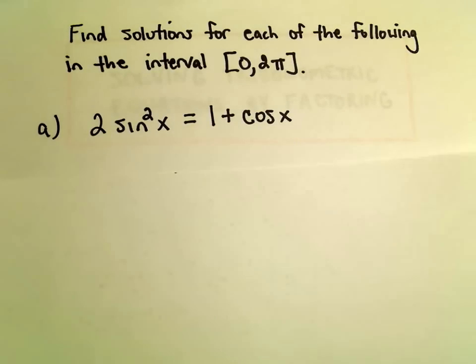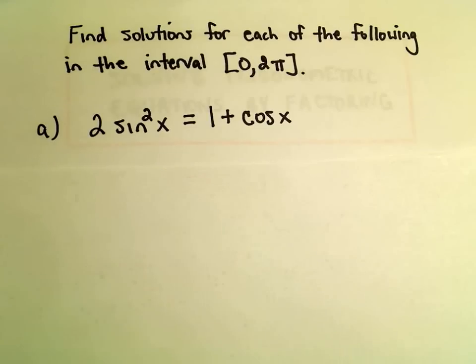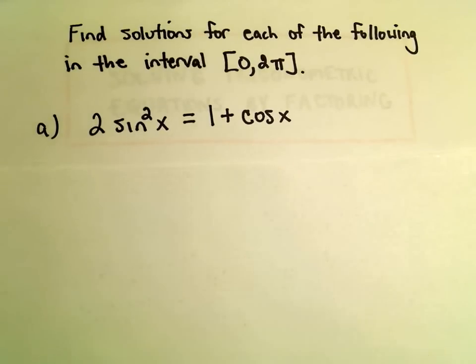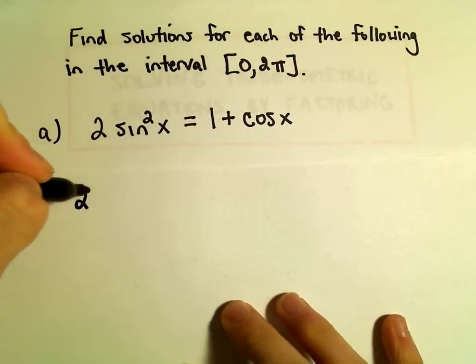Let's look at 2 sin²x = 1 + cos x here first. Initially if I see something like this, I see sines and cosines, I don't really see much to factor. But we can certainly use our trig identity.